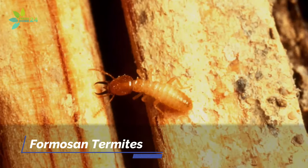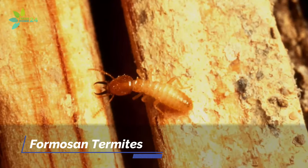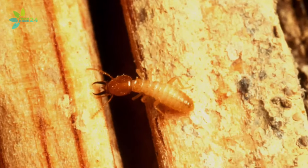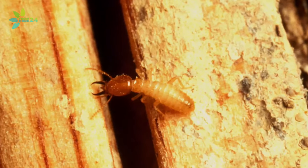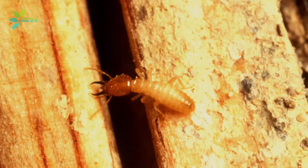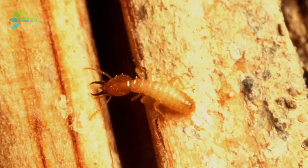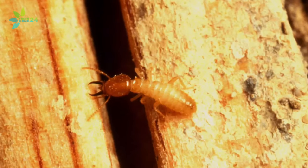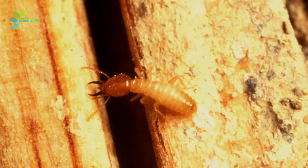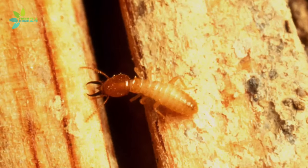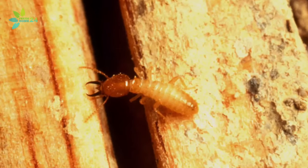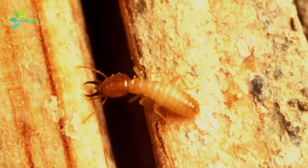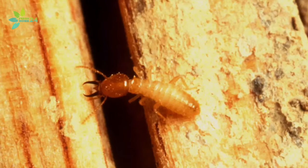The Formosan subterranean termite soldier measures about a half inch long. Its head is darker and oval in shape, with a rounded abdomen, thick waist, straight antennae, and no eyes. Like eastern subterranean soldiers, Formosan soldiers have powerful jaws to defend their colonies.